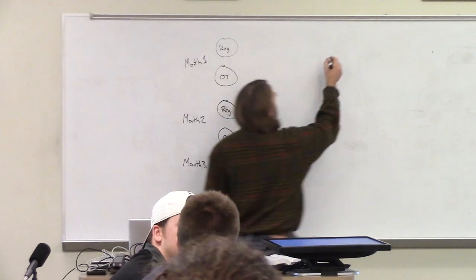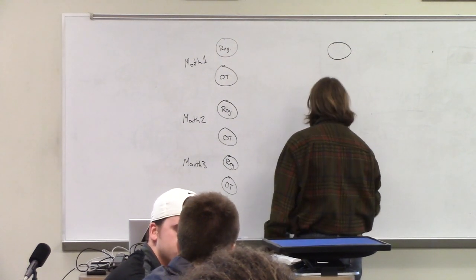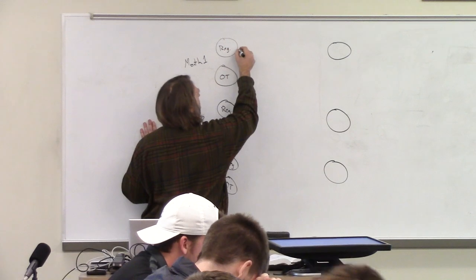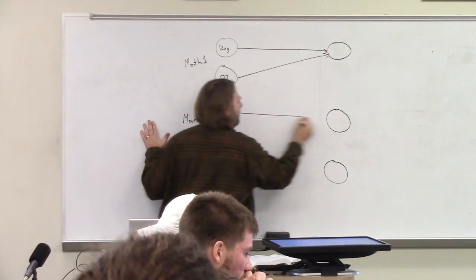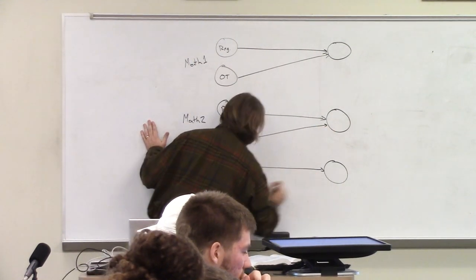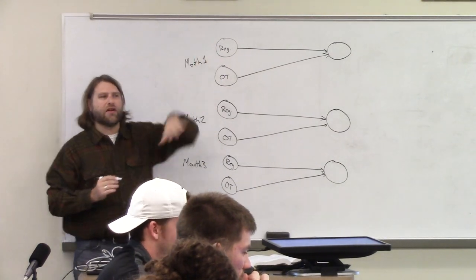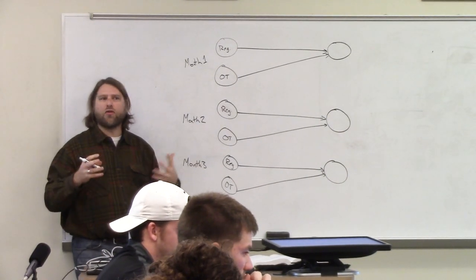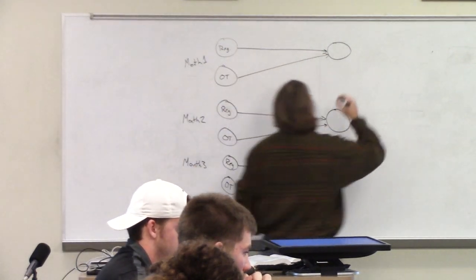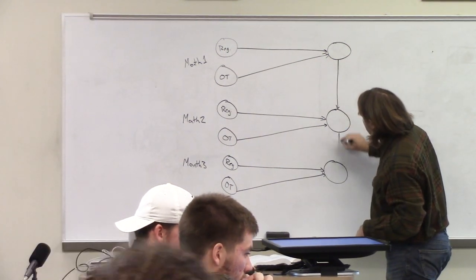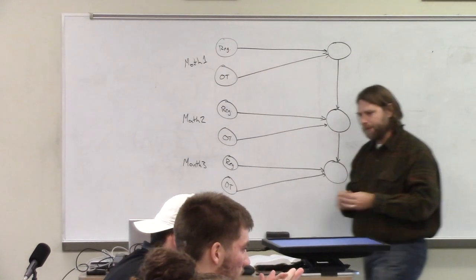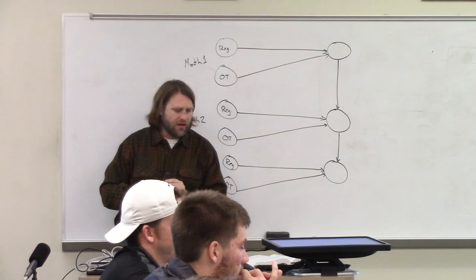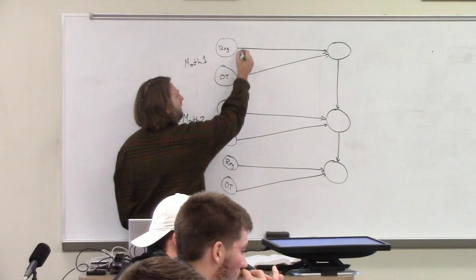And then we have demand for each of those months. We can produce for each month where either our regular production or overtime production generates the supply that we need. But we can also store in a warehouse or a facility from month to month, so there is also this kind of a connection. And then we put costs on each of these lines.